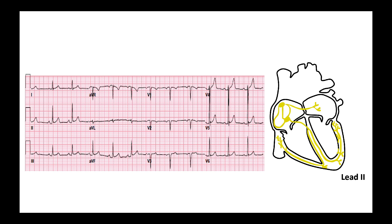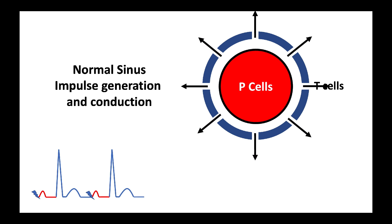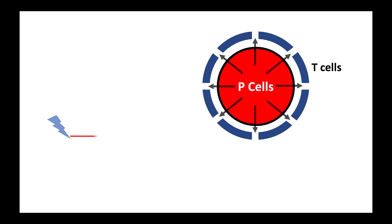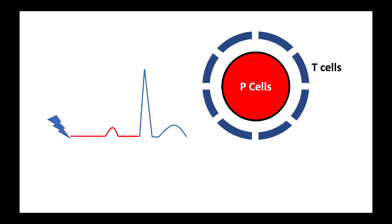For example, atrial depolarization starting and propagating from the sinus node travels downwards and to the left, and in such a situation it is exactly in the face of lead II — thus a positive P wave in lead II signifies sinus node depolarization. Normally, the transitional T-cell layer allows seamless conduction of P cell depolarization to the atrial muscle. However, because of this transitional layer, it becomes prone to conduction blocks. If conduction out of the transitional layer to the atrium is slowed, there is a delay — or sometimes complete loss — of atrial depolarization, which occurs in situations such as sinus pauses.